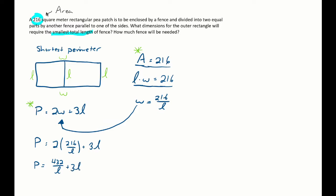That's now an equation in one variable. So I can take the derivative of that with respect to l and I'll be able to find critical points and that's where a max or min might occur. So dp dl is equal to 432 times negative 1 times l to the negative 2. So I just did a power rule there. That would be negative 432 divided by l squared plus 3.